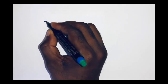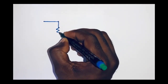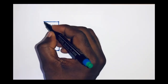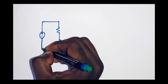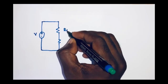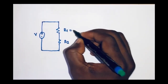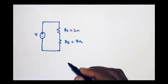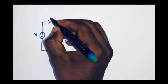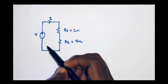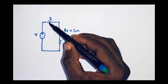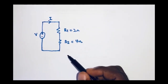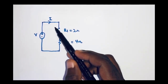Let's consider a circuit diagram where we have two resistors, R1 and R2, connected in series, and a voltage source V connected across them. We have R1 equal to 2 ohms and R2 equal to 4 ohms. The voltage source drives current I through the two resistors from the positive terminal back to the negative terminal. Because we have the same current flowing through both resistors, we can see that they are connected in series.